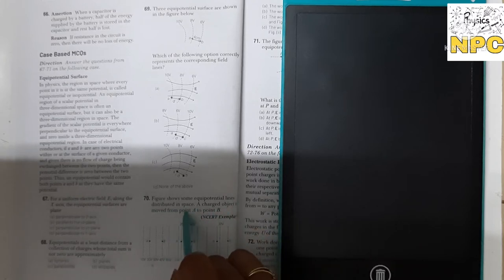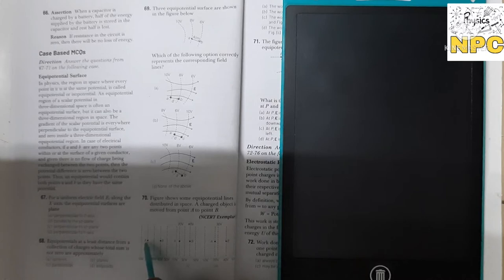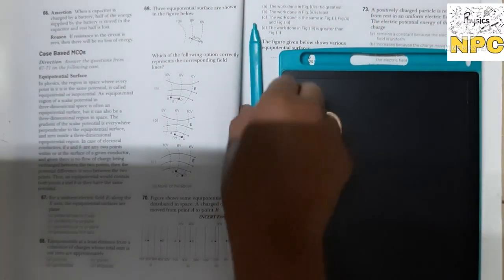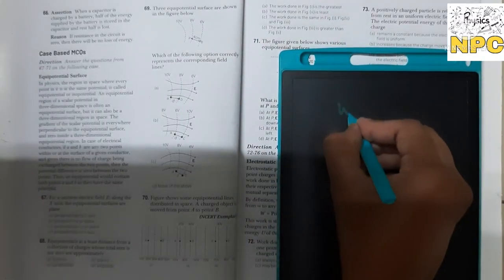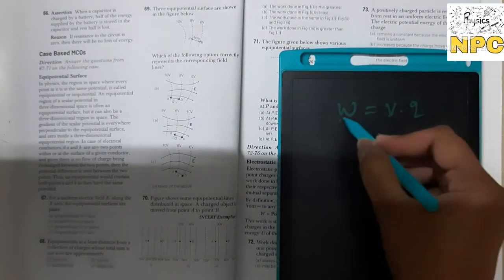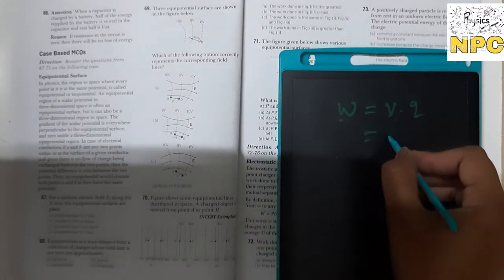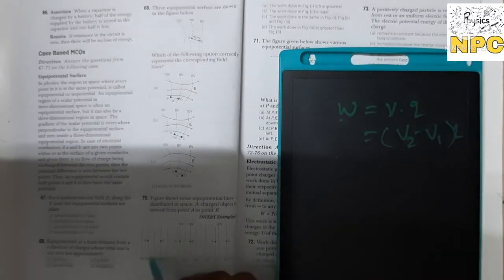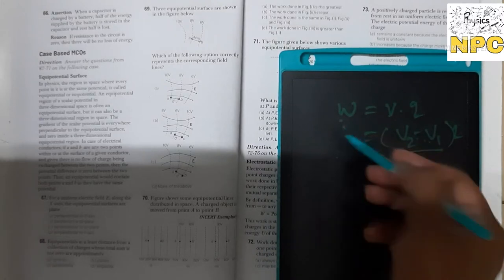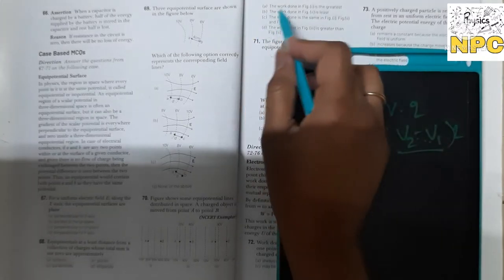The figure shows some equipotential lines distributed in space. A charged object is moved from point A to B — that is an equipotential region. We need to find the work done. Work done formula: W equals Q times V, because work done equals potential times charge. For two points, the potential difference is V2 minus V1. In all diagrams the potential difference is the same, so work done is the same in all figures. Answer C is correct.